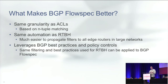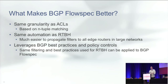So what makes BGP flow spec better? It gives you more granularity than just a straight access list — you can get a lot more particular about what traffic you want to block versus allow. But it gives you similar automation to what we had with remote trigger black hole, where either from an internal route server you can advertise those routes, or if you trust your customers, you can allow them to send you flow spec routes and block traffic based on their routes. And it leverages the BGP best practices and policies that we as an industry have been using for years — it's not like we're running a new protocol to accomplish this.